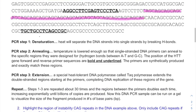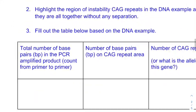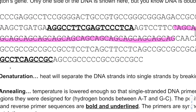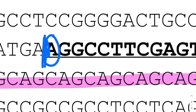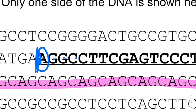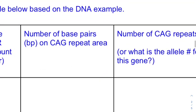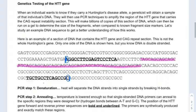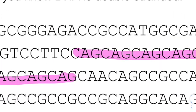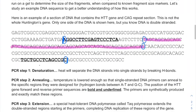Let's fill out the table. In this section of DNA shown, what's the total number of base pairs in the PCR amplified product from primer to primer? Starting with this adenine and ending with this cytosine, count them all up. The next column asks for the number of base pairs in the CAG repeat area — starting with this C and ending with that G, count all the CAGs. And the third column asks how many trinucleotide CAG repeats there are — not individual bases, but how many CAG groups. Count those up and then do the math for the last column.